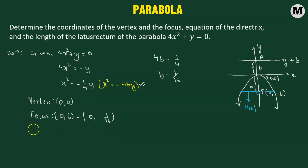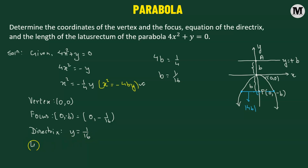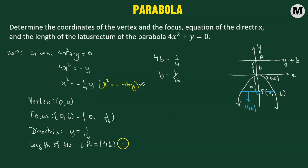The equation of the directrix is y equals positive p, which gives y equals one-sixteenth. Finally, the length of the latus rectum is the absolute value of 4p. Replacing p with one-sixteenth, we get one-quarter. That is the length of the latus rectum of the given parabola.